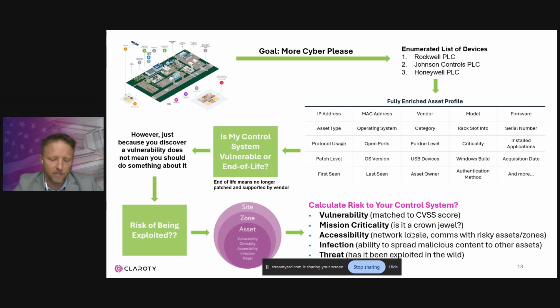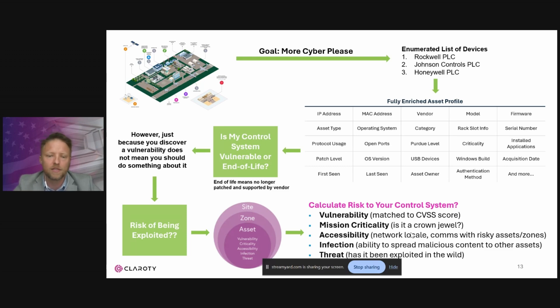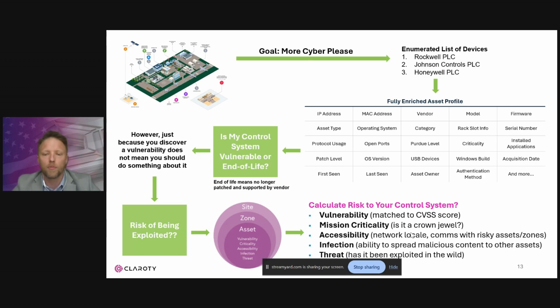There's also some leading-edge thinking coming out soon called the Exploitability Predictability Scoring System, which will do an even better job of matching vulnerabilities to what's being actively exploited in the wild. As a team, you need to focus on assets that aren't just vulnerable, but that also carry these compounding risk factors. Taking this approach helps you focus on reducing the overall attack surface for your operational technology networks.